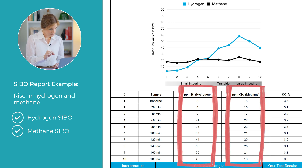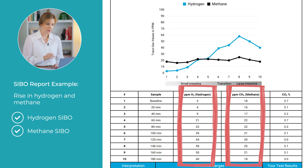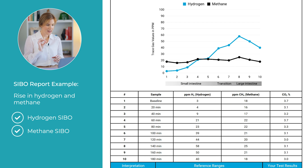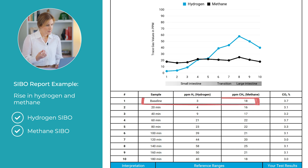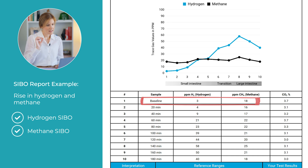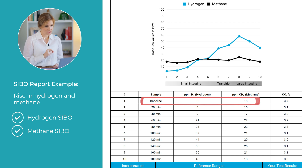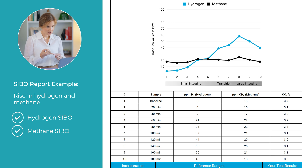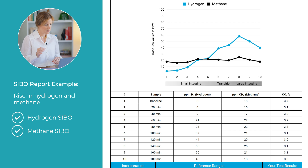The next two columns on the SIBO report list gas levels for hydrogen and then methane gas, and they tell us if you have an elevation that indicates a positive SIBO breath test result. The baseline level, which is on the top row of the table, represents the initial levels of hydrogen and methane on your breath before you ingest the sugar solution. Remember, the sugar solution options are either lactulose, glucose, or fructose, and these baseline levels give us a starting point to measure gas levels.